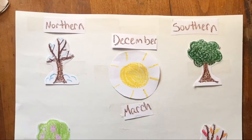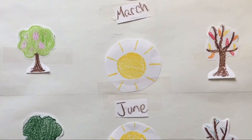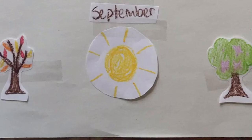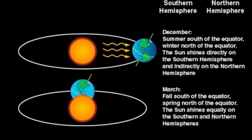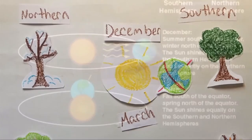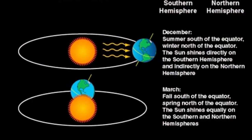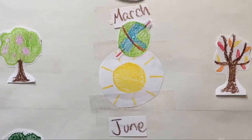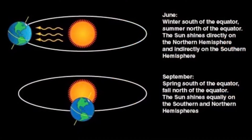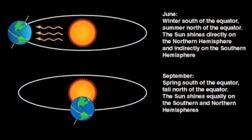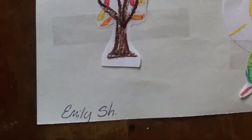Now we tape down our suns. Now we consult the guide to see where the Earth should be. So for December, it should be to the right. For March, we tape it above our sun. For June, we tape it to the left of our sun. Lastly, for September, we tape it below our sun. Now we can write our names at the bottom corner of our papers and we are done.